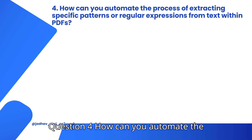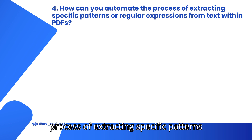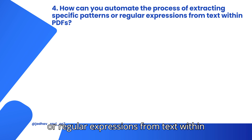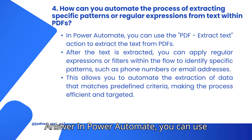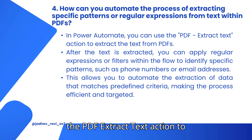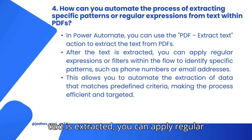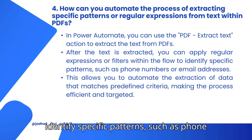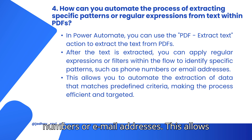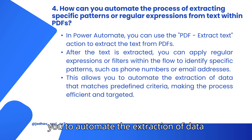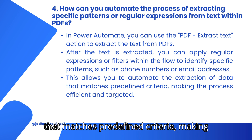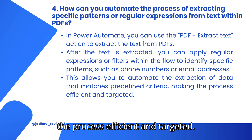Question 4: How can you automate the process of extracting specific patterns or regular expressions from text within PDFs? In Power Automate, you can use the PDF Extract Text Action to extract the text from PDFs. After the text is extracted, you can apply regular expressions or filters within the flow to identify specific patterns, such as phone numbers or email addresses. This allows you to automate the extraction of data that matches predefined criteria, making the process efficient and targeted.